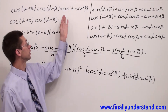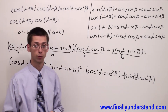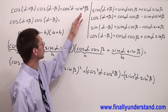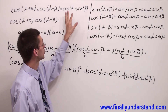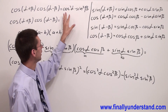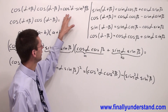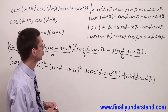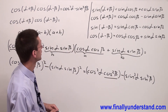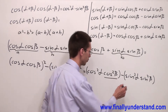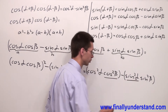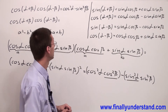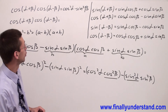Now we look at the right side of the original equation: we have cosine squared alpha minus sine squared beta. This means we do not want to see any cosine beta, and we do not want to see any sine alpha. So what are we going to do with them? We are going to apply the Pythagorean relation.